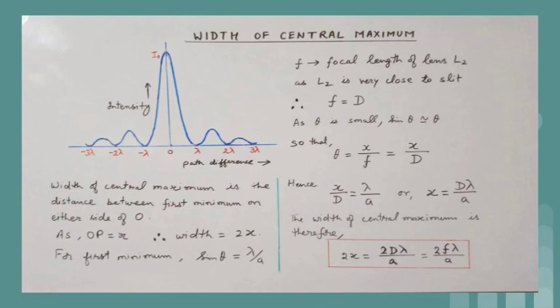Hence, x by D is equal to lambda by A, or x is equal to D lambda by A. The width of the central maximum is therefore 2x, which is equal to 2D lambda by A, or also equal to 2F lambda by A. We see that in the diffraction pattern, the width as well as the intensity of the central maximum is greater compared to those of the secondary maxima.